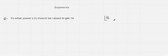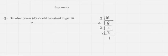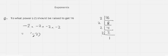Next question: to what power should minus 2 be raised to get 16? So here we need to do prime factorization of 16. 2 times 8 is 16, 2 times 4 is 8, 2 times 2 is 4, and 2 times 1 is 2. Now I need to write in power of minus 2. So in place of 2 I write minus 2, giving minus 2 multiplied with minus 2 multiplied with minus 2 multiplied with minus 2 — that is 4 times. So I write minus 2 power 4, which equals 16.